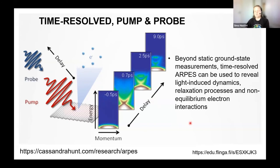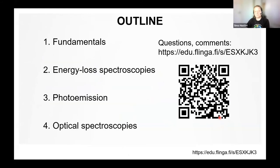It's called bremsstrahlung — meaning breaking radiation — which is typically emitted when an electron hits a target. Now you get the modification of the bremsstrahlung spectrum because of the density of states. One can combine this with time-resolved methods — a pump excites the system and then probing with ARPES is a very nice tool for measuring light-induced dynamics, relaxation processes, and other non-equilibrium electron processes including electron-electron interaction. This is another interesting field.